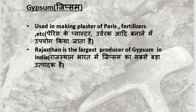Now we will look at gypsum. Gypsum is used in Plaster of Paris. In school, we used Plaster of Paris for many projects. Gypsum is also used in fertilizers. So the two main uses of gypsum are Plaster of Paris and fertilizers. Rajasthan is the largest producer of gypsum in India.